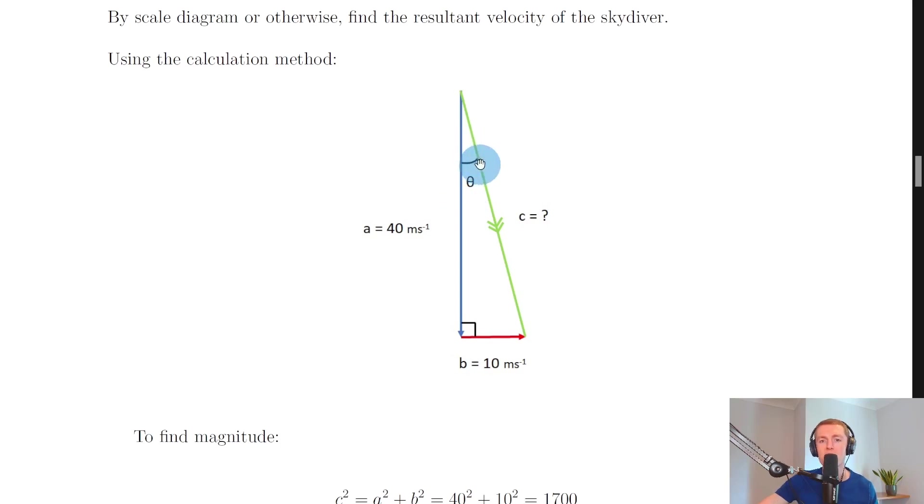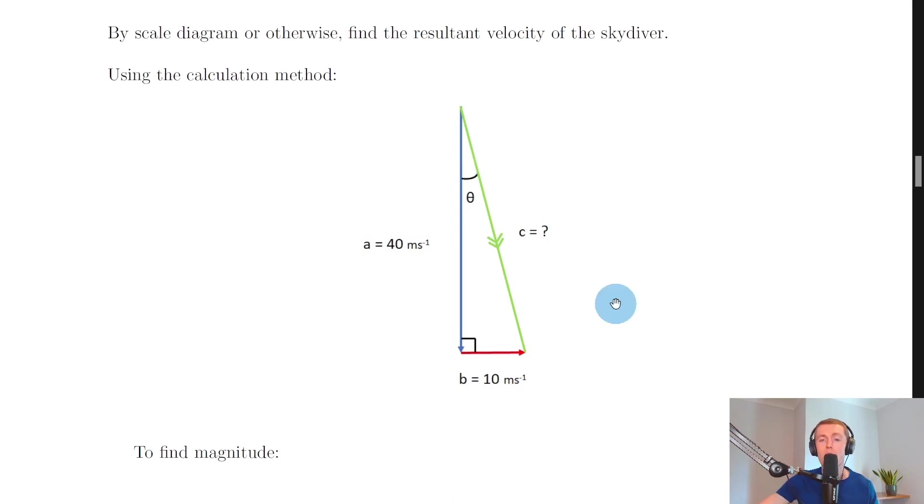Or if I was using bearings remember we define bearings from north 0 0 0. So if I was to draw a little north east southwest on my starting point here then north is going to be up here 0 0 0 and I want to come all the way around until I get to the resultant vector.